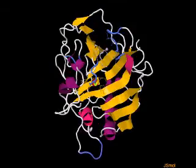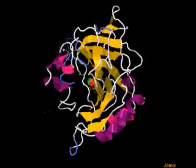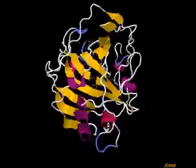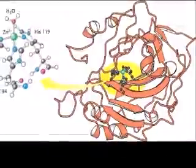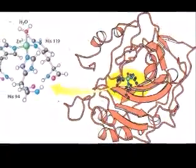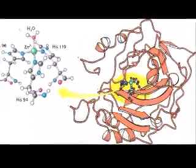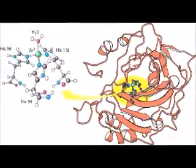It forms coordination bonds with the three surrounding histidine residues, His-94, 96, and 119. These basic polar residues create a perfect pocket for water to enter the active site and bind to zinc, occupying zinc's final coordination site.